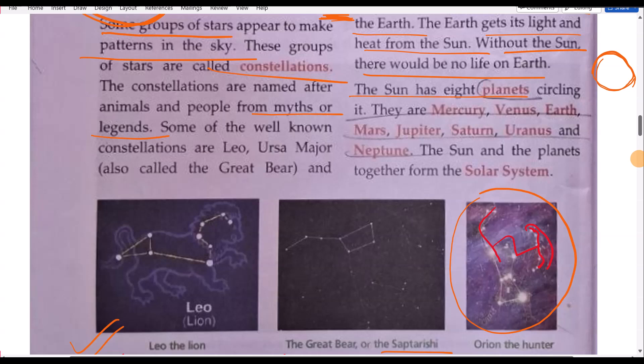The sun has eight planets - Mercury, Venus, Earth, Mars, Jupiter, Saturn, Uranus, Neptune. The sun and the planets together form the solar system.